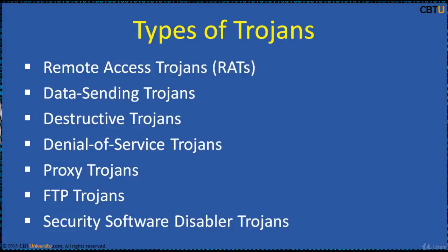Proxy Trojans are used to tunnel traffic or launch hacking attacks via other systems. FTP Trojans are used to create an FTP server in order to copy files onto the system. Security software disabling Trojans are used to stop anti-malware and antivirus software on the compromised system.